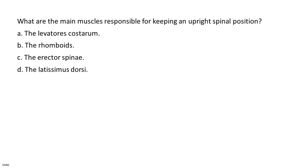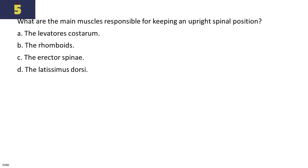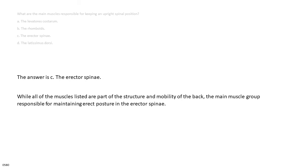What are the main muscles responsible for keeping an upright spinal position? A. The levatores costarum. B. The rhomboids. C. The erector spinae. D. The latissimus dorsi. The answer is C, the erector spinae. While all of the muscles listed are part of the structure and mobility of the back, the main muscle group responsible for maintaining erect posture is the erector spinae.